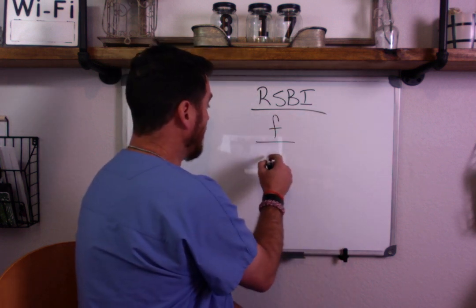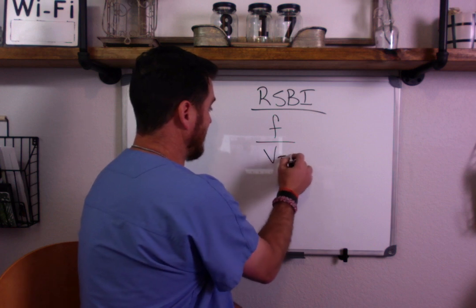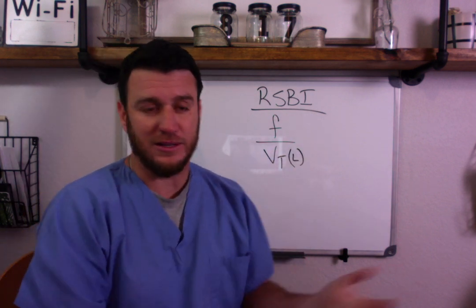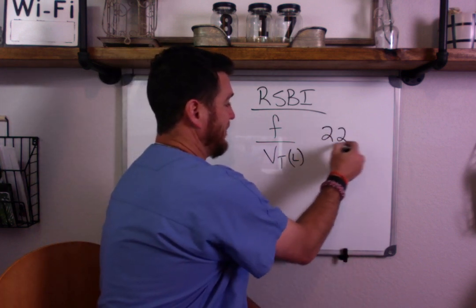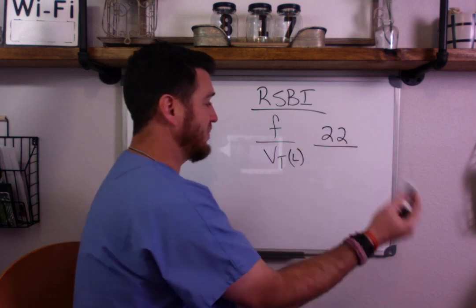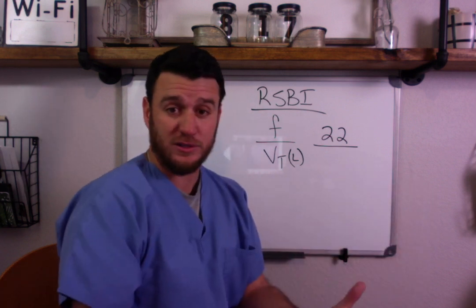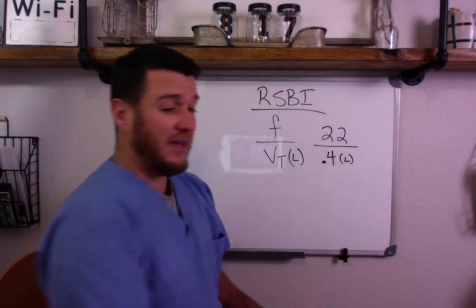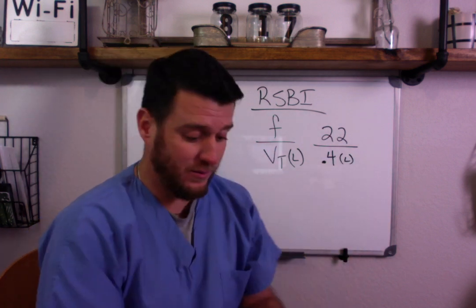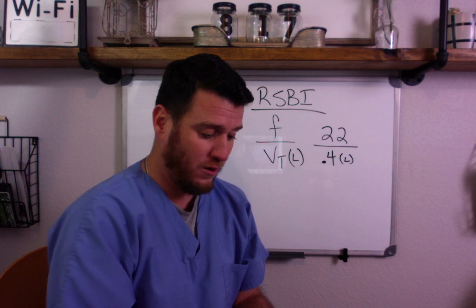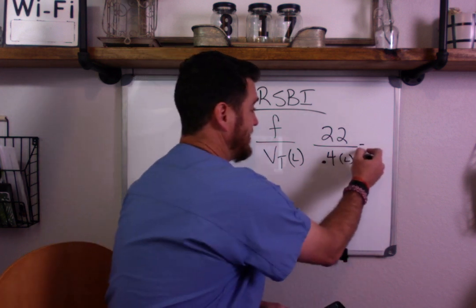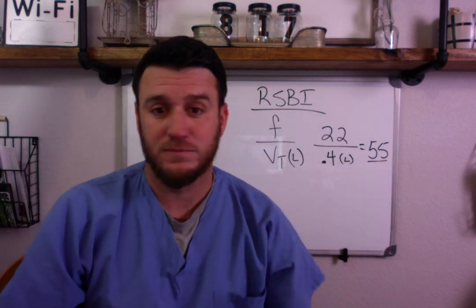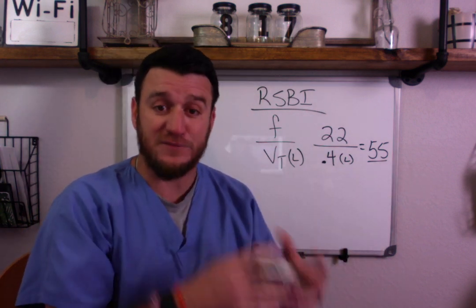Let me show you what it looks like. If you have a patient breathing 22 times a minute with a tidal volume of 400 mL, you turn that into 0.4 liters and do the math: 22 divided by 0.4 — this patient has an RSBI of 55.